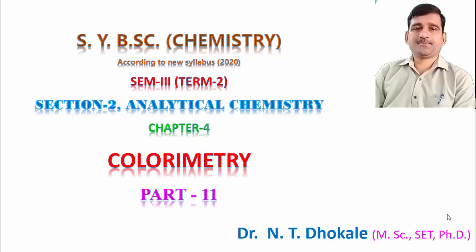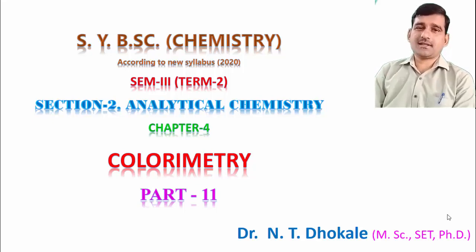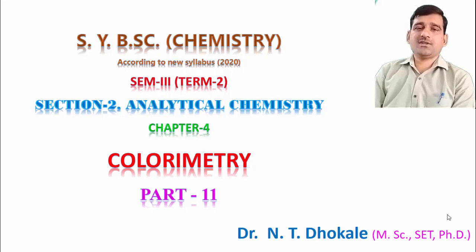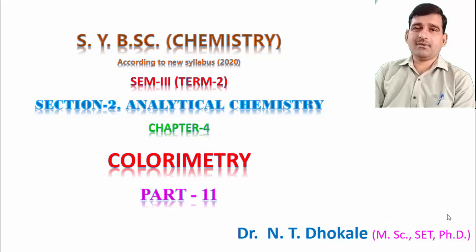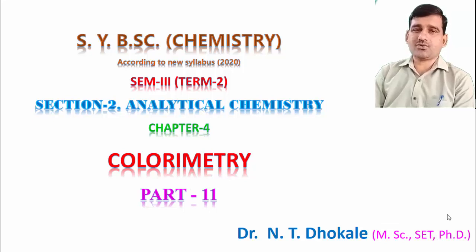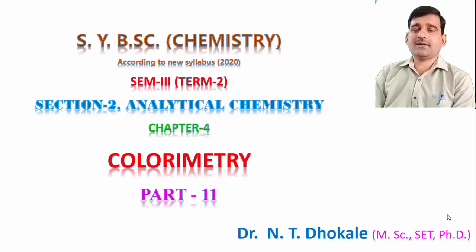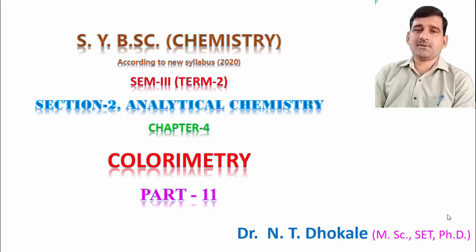Hello friends, hope you are all studying well. Let us discuss the instrumentation part in colorimetry. In the previous lecture we already discussed some basic components used in colorimetry, among which we will discuss the radiation source: tungsten filament lamp, carbon arc lamp, hydrogen lamp, deuterium lamp, xenon discharge lamp, or mercury arc lamp can be used as a radiation source.